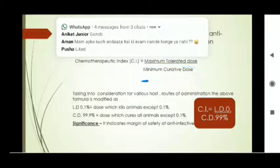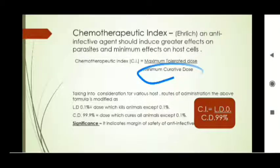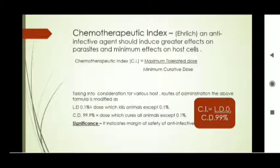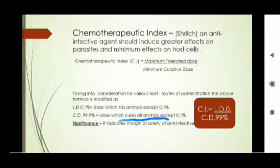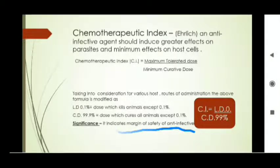The chemotherapeutic index calculates the ratio of maximum tolerated dose — the maximum dose that can be tolerated — to the minimum curative dose — the minimum dose used to cure an infection. Taking into account various routes of administration, the formula is modified using lethal dose (LD) and curative dose (CD). LD is the dose that kills the animal (in this context, the microbe), except 0.1%, and CD is the dose that cures all animals except 0.1%. This indicates the margin of safety of anti-infective agents.